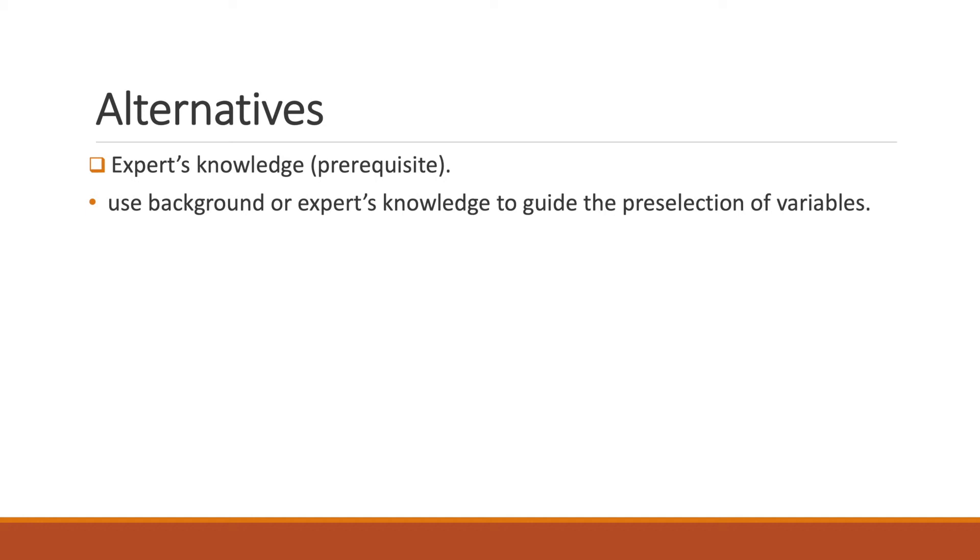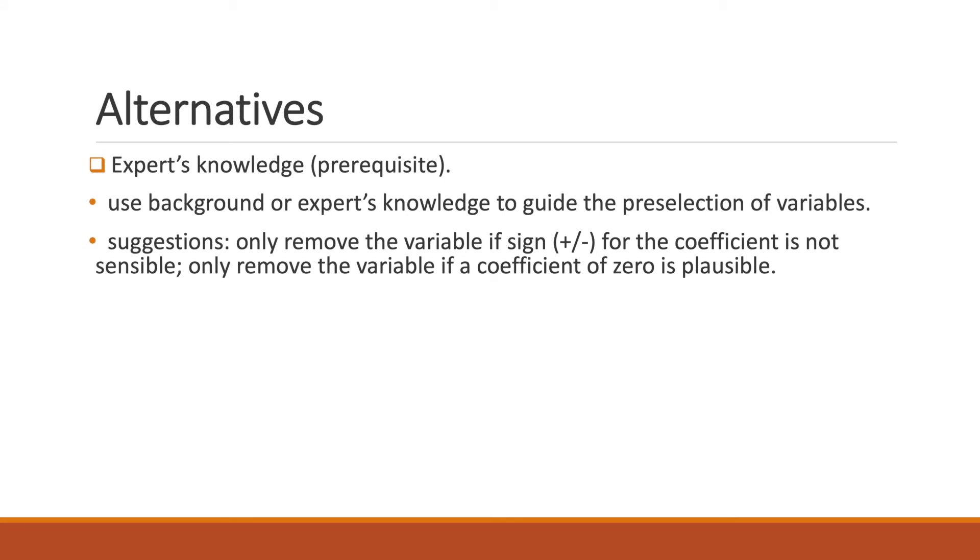Firstly, consider expert knowledge, which is actually a prerequisite of running a regression model. You should consider the background or expert's knowledge in your area of research to guide the preselection of variables or predictors. The general suggestions about variable selections are: you should only remove the variable if the sign for the coefficient is not sensible, and only remove it if a coefficient of zero is plausible for the research questions you are answering.